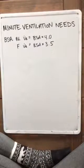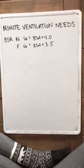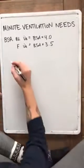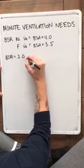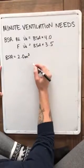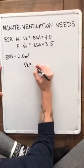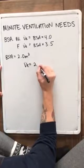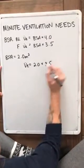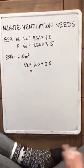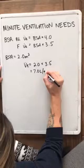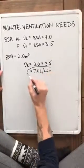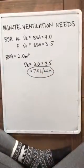Say we have a female with a BSA of 2. That would mean that our estimated minute ventilation would be 2 times 3.5, which is equivalent to 7 liters per minute. This is our estimated minute ventilation need for this female.